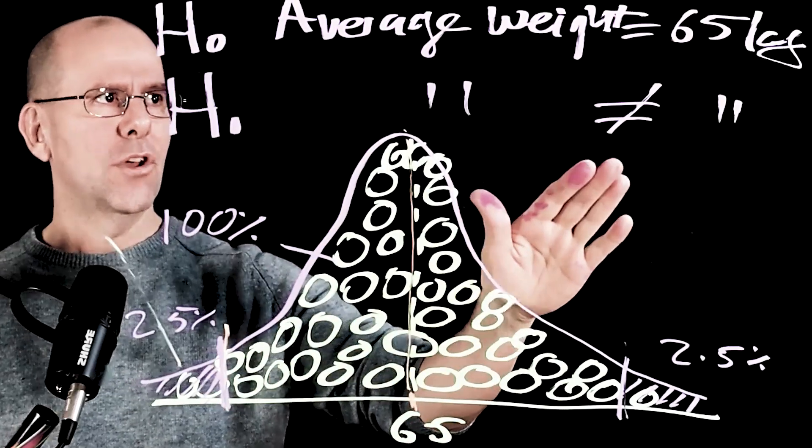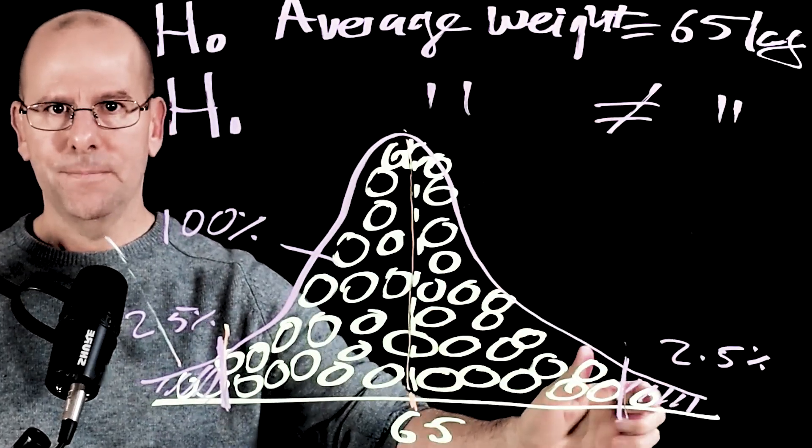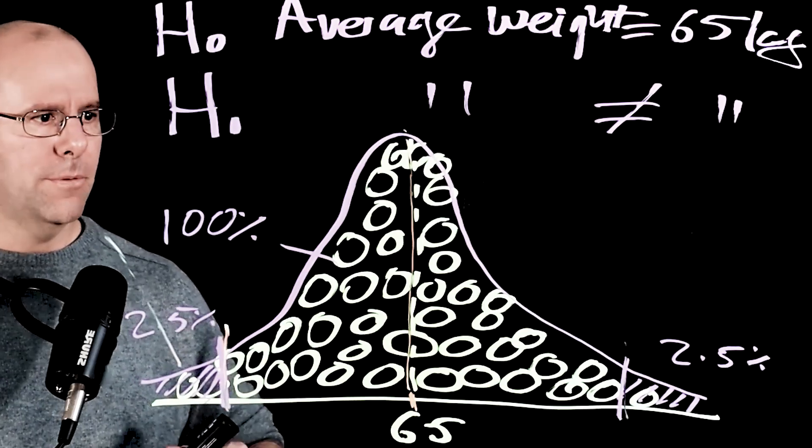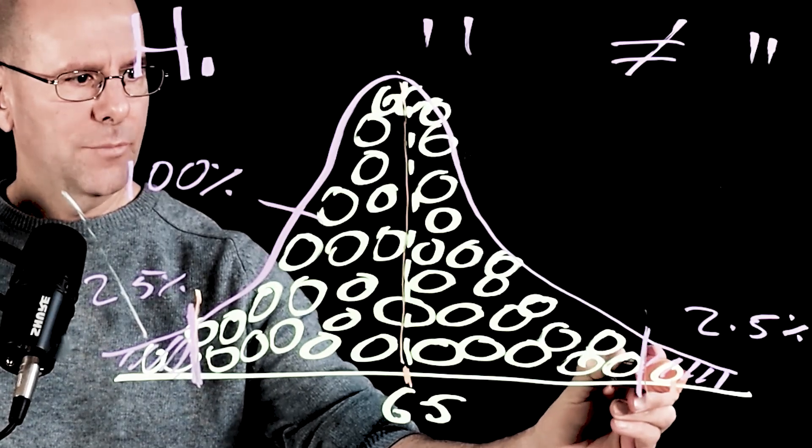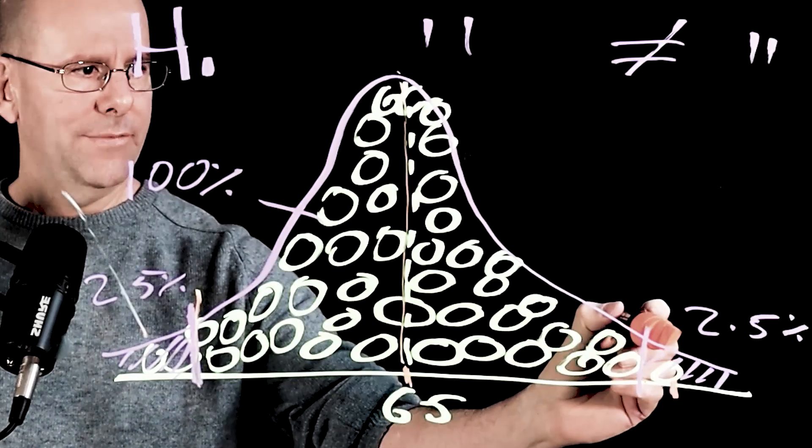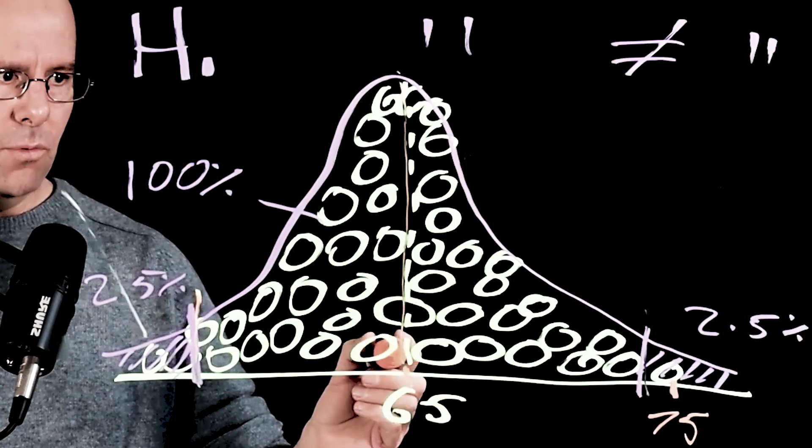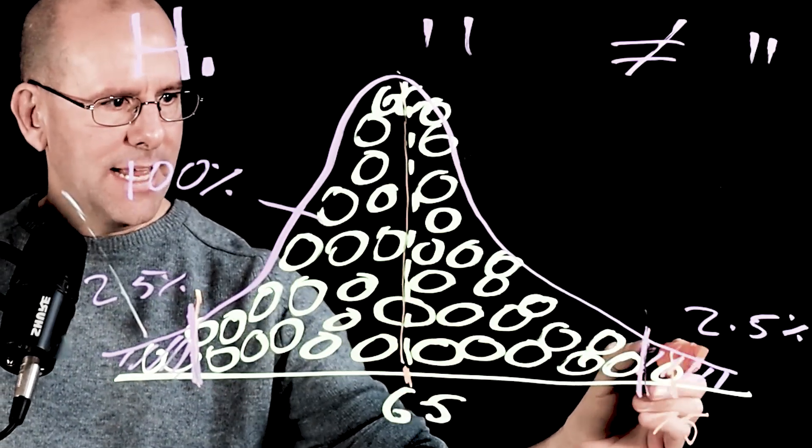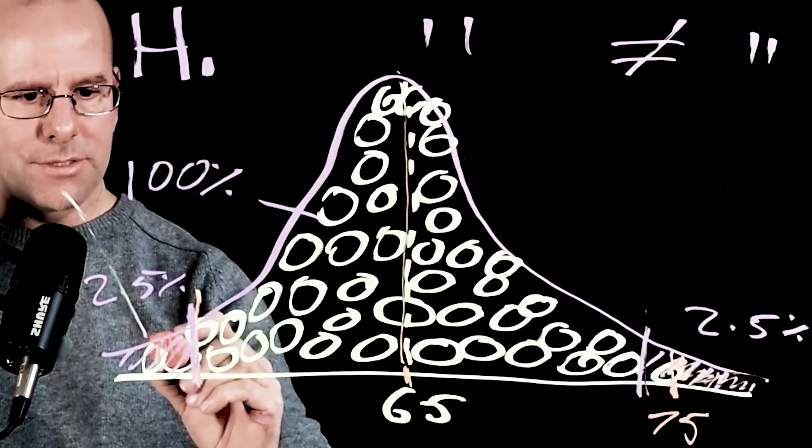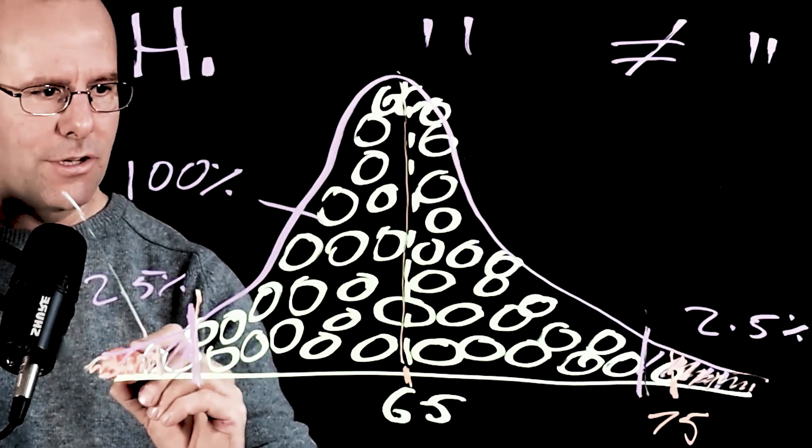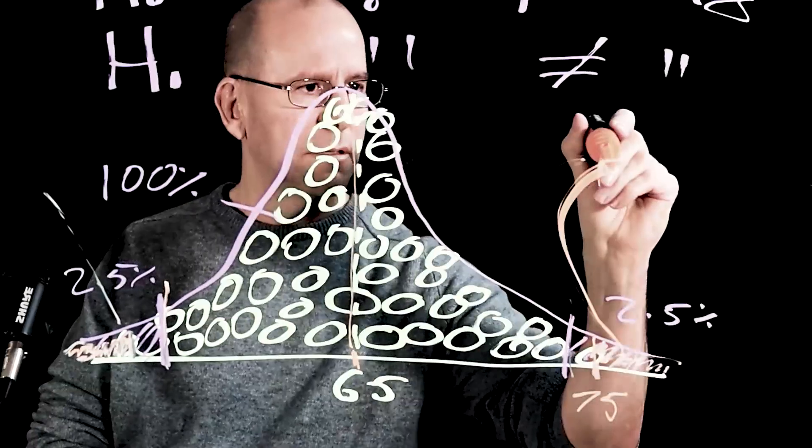If our alternative hypothesis was that the average weight was more than 65, we would just use a one-tailed hypothesis test. Now let's imagine in this particular example, we took a sample from the population and the sample landed up giving us a value that landed over here somewhere. And let's say that that value was 75 kilograms. What we would do is we would say that 75 kilograms lands up in a part of the curve for which on either side, because it's a two-tailed test, there's a probability of getting a sample that's that far away from the middle. And if you add those two together, that would be the p-value.